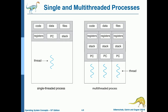Let's look at the comparison between single and multi-threaded processes. For a single-threaded process, it has code, data, and files, and the thread has its own registers, program counter, and stack. For a multi-threaded process, inside a process — for example, three threads — each thread has its own set of registers, stack, and program counter. They only share the code, data, and files with each other.